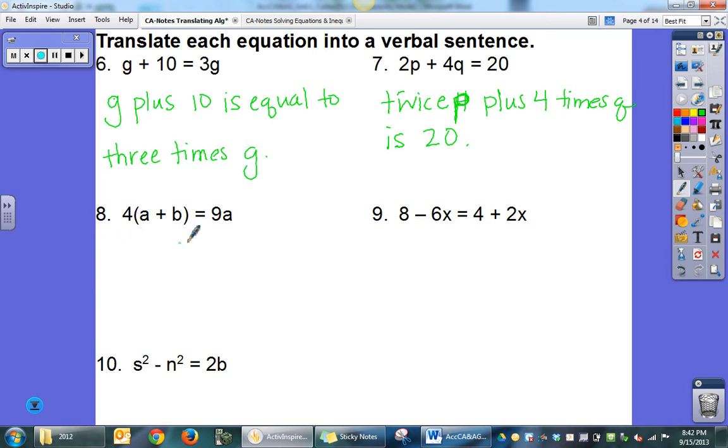Here you've got to be careful because it's 4 times this entire amount, a plus b. So it's going to be 4 times the sum of a and b is 9 times a.